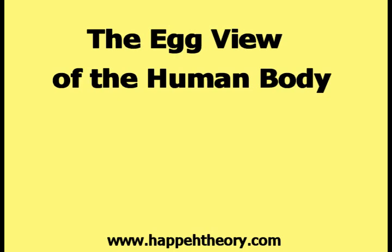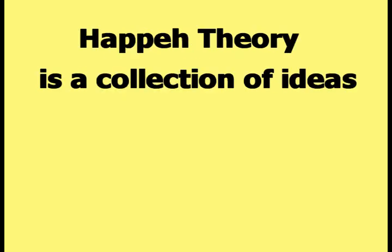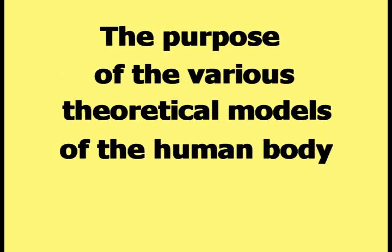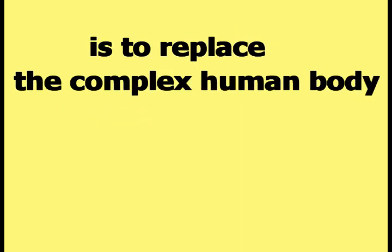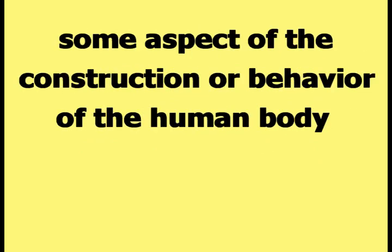This video is about the egg view of the human body. The egg view is one of the theoretical models of the human body created for happy theory, which is a collection of ideas that provide insight into the human body and the culture of human beings. The purpose of these theoretical models is to replace the complex human body with something simple that can be used to more easily explain some aspect of its construction or behavior.